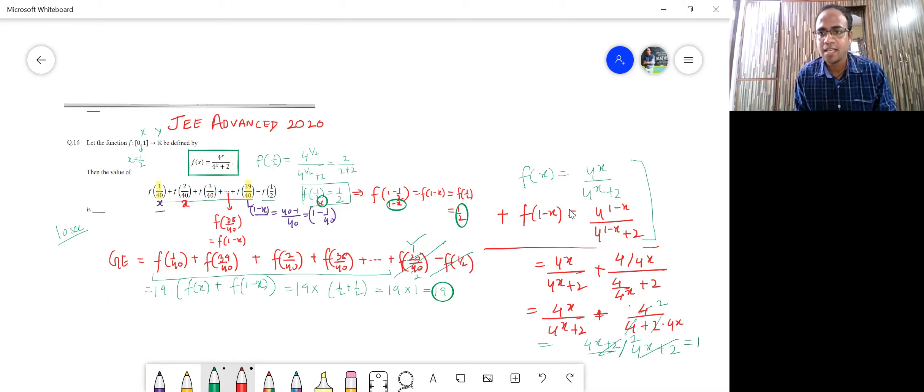Therefore, this whole entity, this addition of this whole entity comes out to be 1. And therefore, this entity is 19 into 1. So the answer is 19. This is how we solve the integer type portion within no time, subjective and objective. And that's why I say JEE Advance with Dipankar Manik becomes a peanut. So come and join and enjoy this. Thank you.